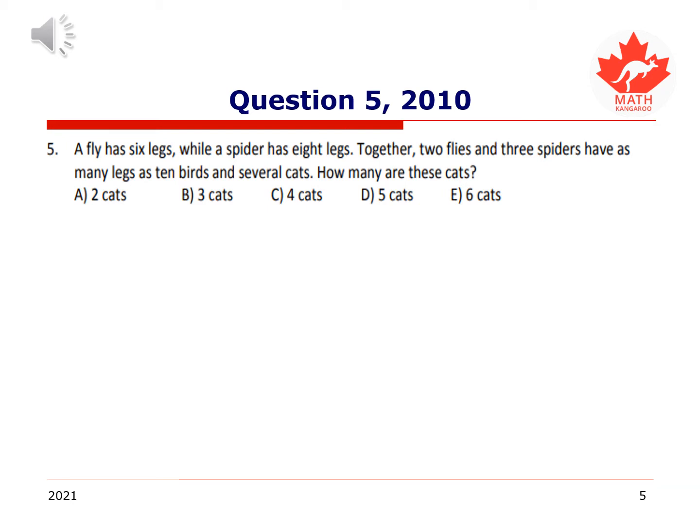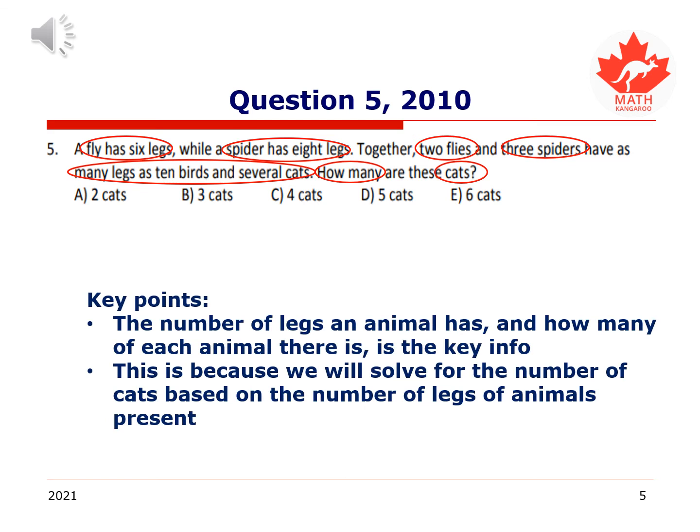We're going to have to move right along here. Right on to question 5 from 2010. This question is all about legs. A fly has six legs while a spider has eight legs. Together two flies and three spiders have as many legs as 10 birds and several cats. How many cats are there is what the question is really saying. I circled all the information because we need to know how many animals there are and how many legs each of them has.